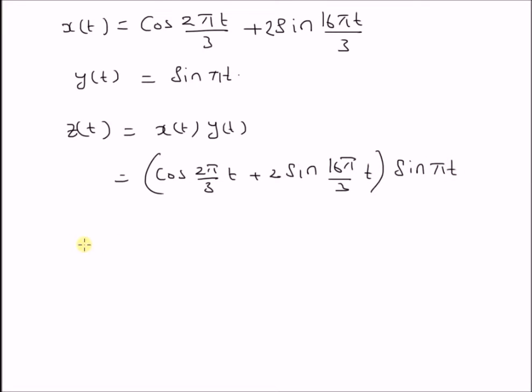Next, by using the standard trigonometric formulae, we can rewrite this product as follows. The product of cos(2π/3·t) with sin(πt) becomes (1/2)(sin(5π/3·t) + sin(π/3·t)).